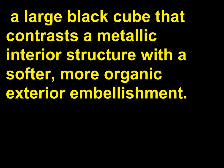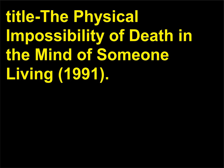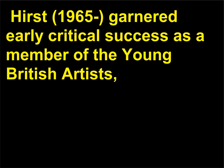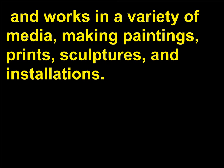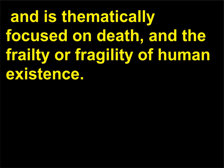Why did Damien Hirst preserve a tiger shark in formaldehyde solution? Damien Hirst's preserved shark piece might not mean much without its title: The Physical Impossibility of Death in the Mind of Someone Living (1991). Hirst (born 1965) garnered early critical success as a member of the Young British Artists, and works in a variety of media — making paintings, prints, sculptures, and installations. Hirst's pickled shark, like much of his work, features dead animals and is thematically focused on death and the frailty or fragility of human existence.